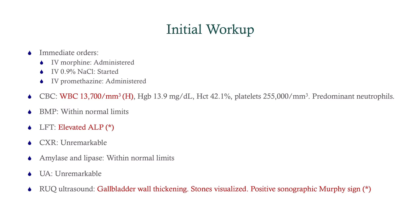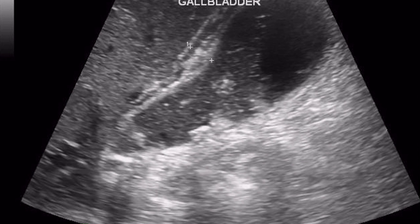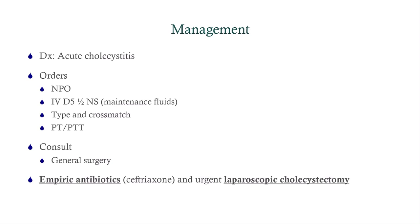The CBC shows a high white count with predominant neutrophils. Liver function tests show an elevated ALP, indicating possible biliary tract pathology. Chest x-ray, amylase, lipase, and urinalysis are all unremarkable. The right upper quadrant ultrasound shows gallbladder wall thickening, stones are visualized, and there is a positive sonographic Murphy's sign. This is what the gallbladder looks like in a patient like this — you can see a stone, some thickening measured here, and this hazy material here is sludge, which is not uncommon with cholecystitis. The diagnosis is acute cholecystitis based on the ultrasound and clinical picture.